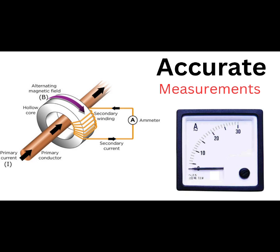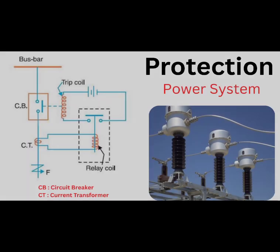Two, accurate measurement. Current transformers enable accurate measurement of high currents, which is essential for monitoring and control in power systems. By accurately measuring current, utilities and industries can optimize their operations, detect anomalies, and prevent potential issues.